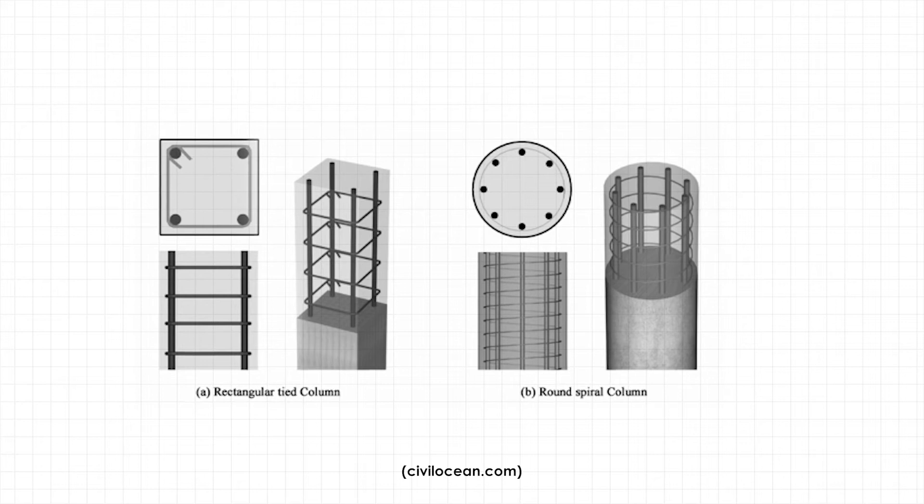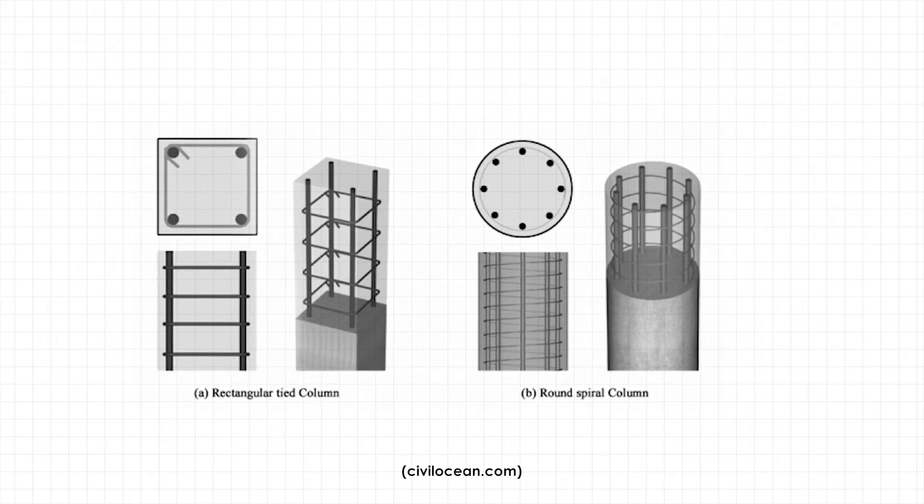Before we get into the specific columns we're going to use on this building, it's important to note that the shape, size, and material used to make columns are usually determined by an engineer — someone who understands how load works, how to do calculations, and makes sure you're using the right steel and the right mix of concrete to determine if the column is big enough to hold a certain load. For this building and most buildings we do in Jamaica, we have a standard column type.